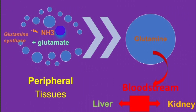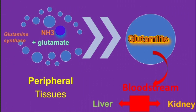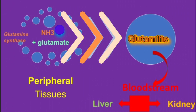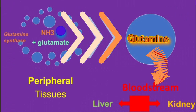Peripherally, ammonia can be condensed with glutamate to form the amino acid glutamine. This is catalyzed by glutamine synthase, present in many tissues. The incorporation of ammonia into glutamine detoxifies it and puts it in a form that is easily transportable.